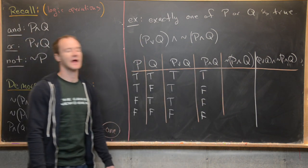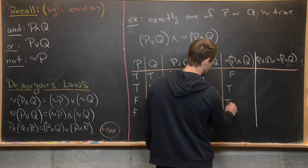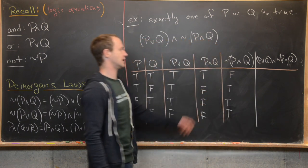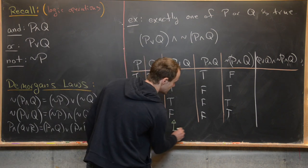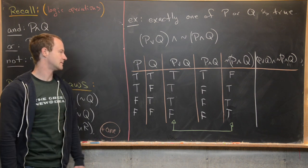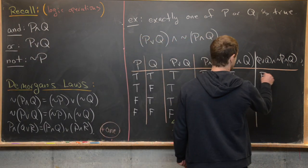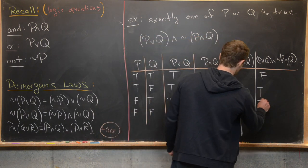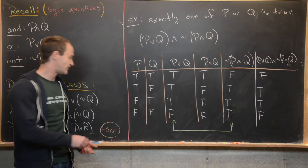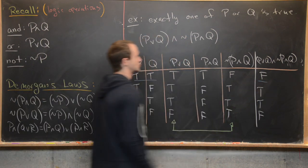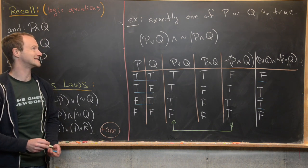After filling in OR and AND, we negate (P AND Q) to get NOT(P AND Q): false, true, true, true. Now we AND the OR column with the NOT(P AND Q) column: true AND false gives false; true AND true gives true; true AND true gives true; false AND true gives false. This gives exactly what we wanted: false when both P and Q are true, true when exactly one is true, and false when both are false.